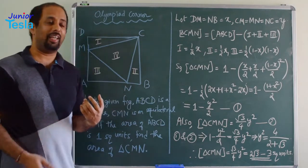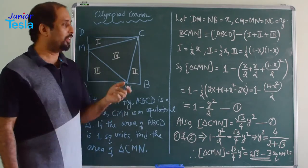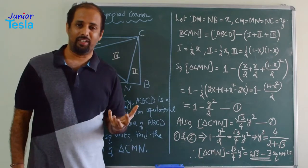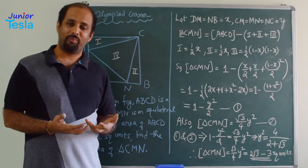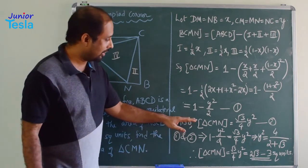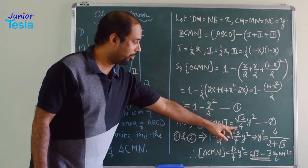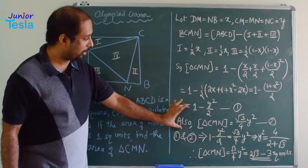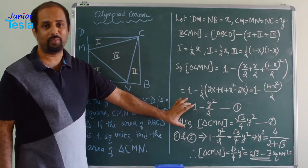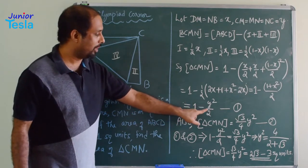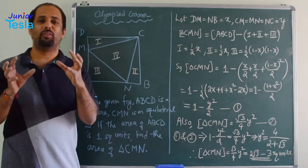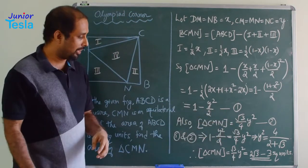We can also find the area of triangle CMN another way. Since the side is Y and it is an equilateral triangle, the area = (√3/4) × Y². We equate the two expressions: 1 − Y²/2 = (√3/4) × Y².